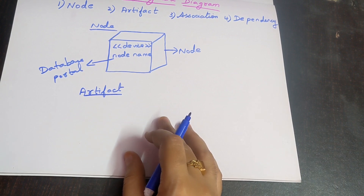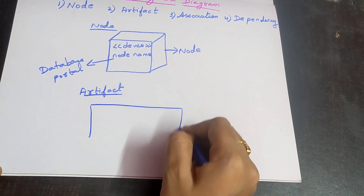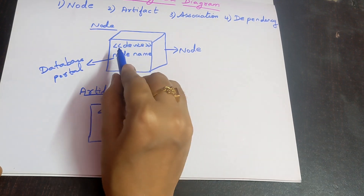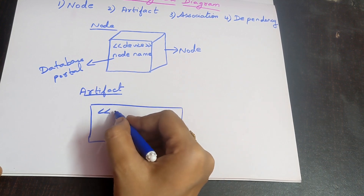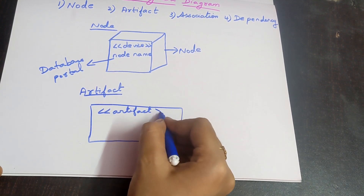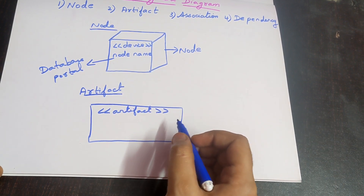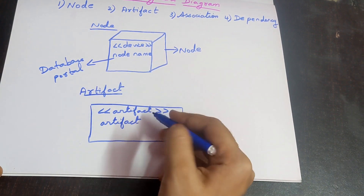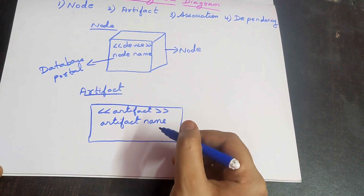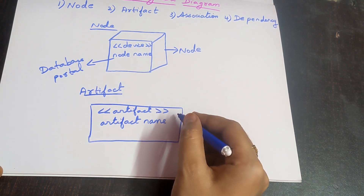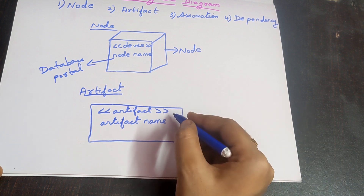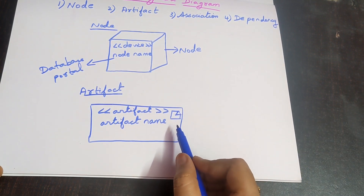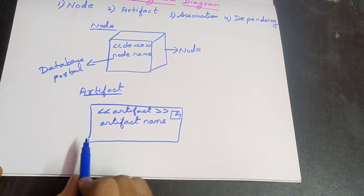Now let's look into the symbol for artifact. The first step is you need to draw a rectangle. The second step is you put the double angle bracket symbol, write 'artifact', and close that symbol. The third step is below that you write the artifact name. The fourth step is on the top right corner, you need to draw a folded-corner page icon. That is how you draw the symbol for artifact.